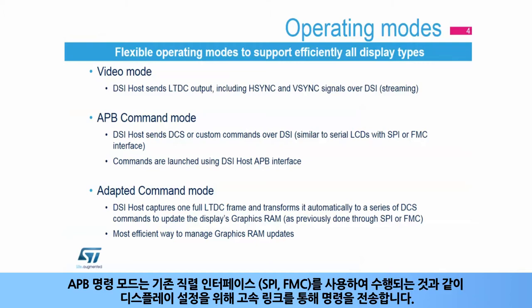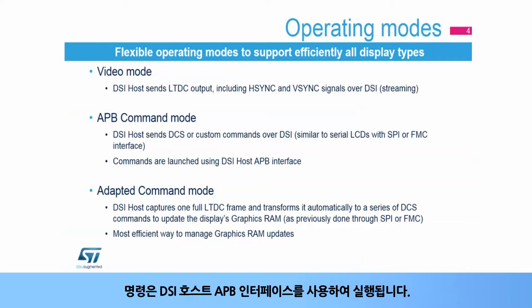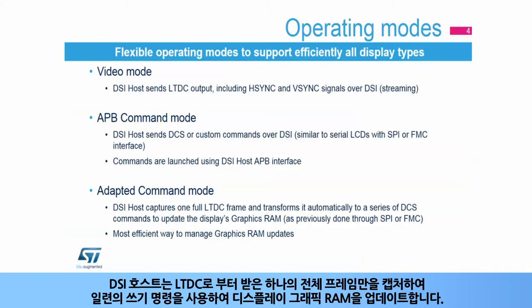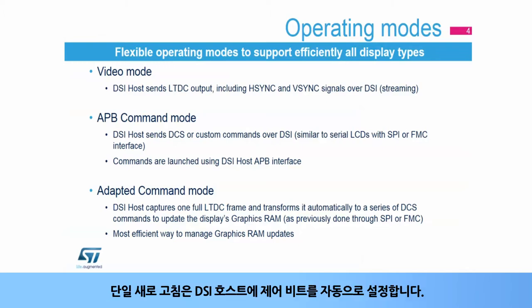APB command mode sends commands over the high-speed link for configuration, as it is done using a legacy serial interface such as SPI or FMC. The commands are launched using the DSI host APB interface. Adapted command mode is the best way to interface with a display having its own internal graphics RAM. The DSI host captures only one full frame coming from the LTDC and transforms it into a series of write commands to update the display graphics RAM. This one-shot refresh automatically sets a control bit in the DSI host.